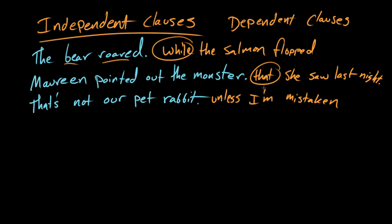that's either a subordinating conjunction like while or unless or a relative pronoun like that. So while the salmon flopped. You can see in this context the bear roared while the salmon flopped. You can kind of understand